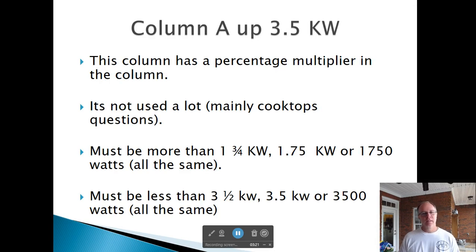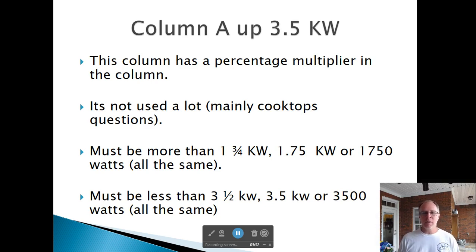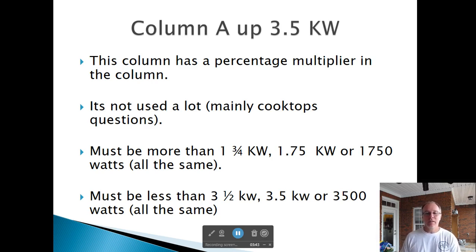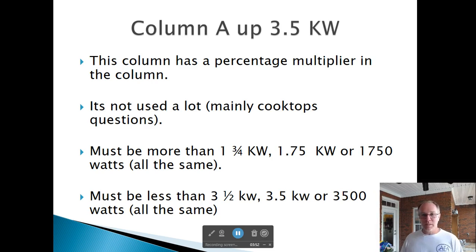Column A is up to 3,500 watts — it's a percentage and not used a lot. Column A is essentially cooktops, Column B is ovens, and Column C is a range. So A plus B equals C — if you take a cooktop and an oven, you get a range.